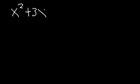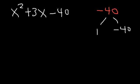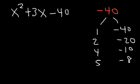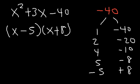Now what about x squared plus 3x minus 40? What two numbers multiply to negative 40 but add to 3? Negative 40 divided by 1 is negative 40, divided by 2 is negative 20, divided by 4 is negative 10, and divided by 5 is negative 8. Now 5 plus negative 8 is negative 3, so if we change the signs: negative 5 plus 8 is positive 3. So the answer is x minus 5 times x plus 8, which equals x squared plus 3x minus 40.